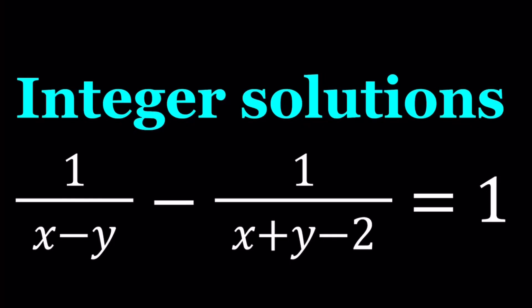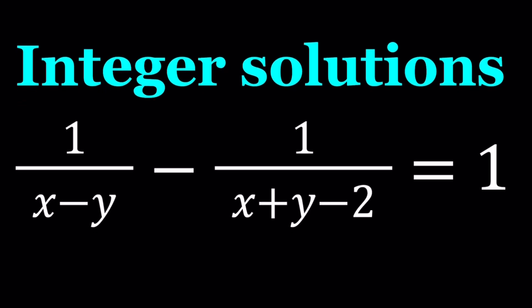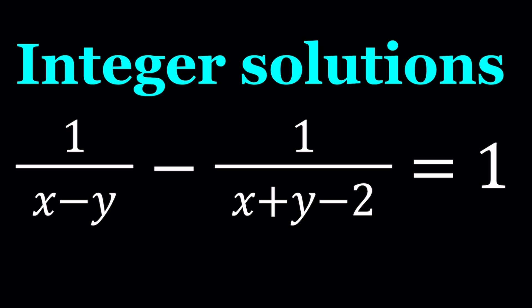Hello everyone. In this video we're going to be solving a homemade Diophantine equation. So we have 1 over x minus y minus 1 over x plus y minus 2 equals 1, and x and y are integers. The idea for this problem came to me a long time ago and I just modified it a little bit. There are some certain restrictions here. First of all, x minus y cannot be 0, so x and y have to be different. And x plus y cannot be 2.